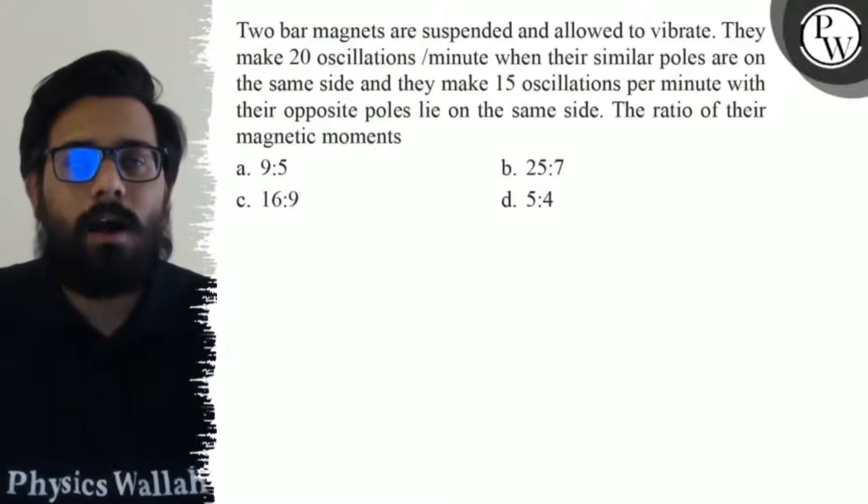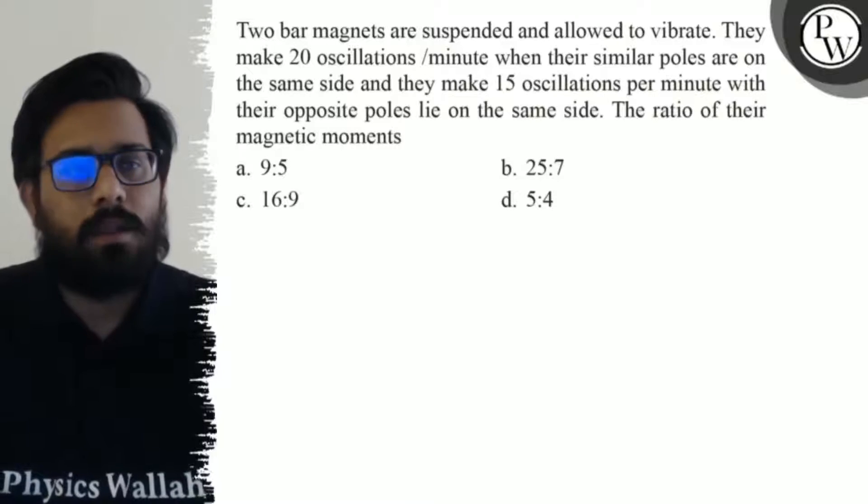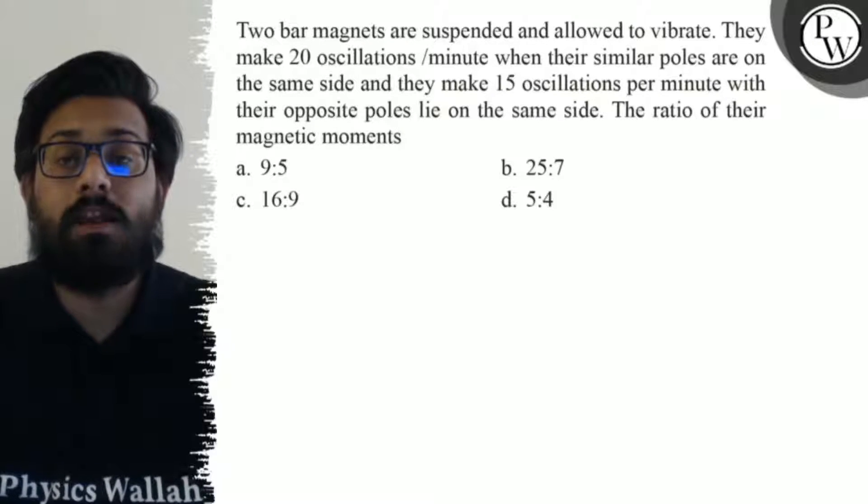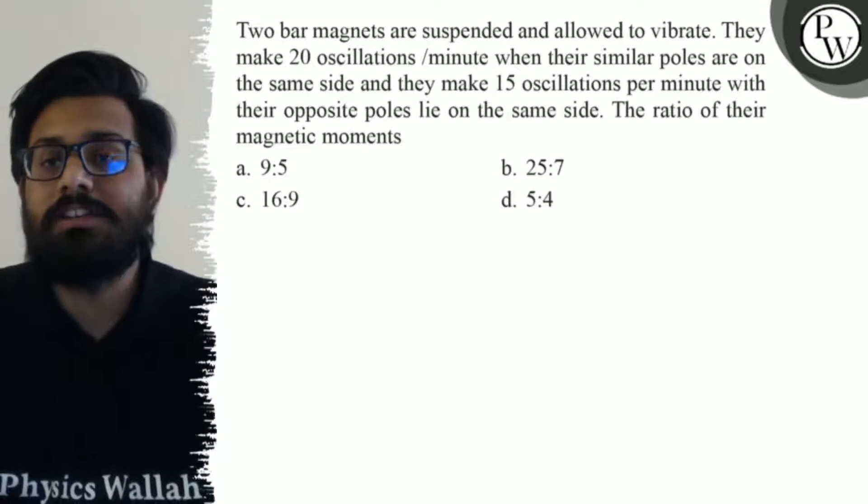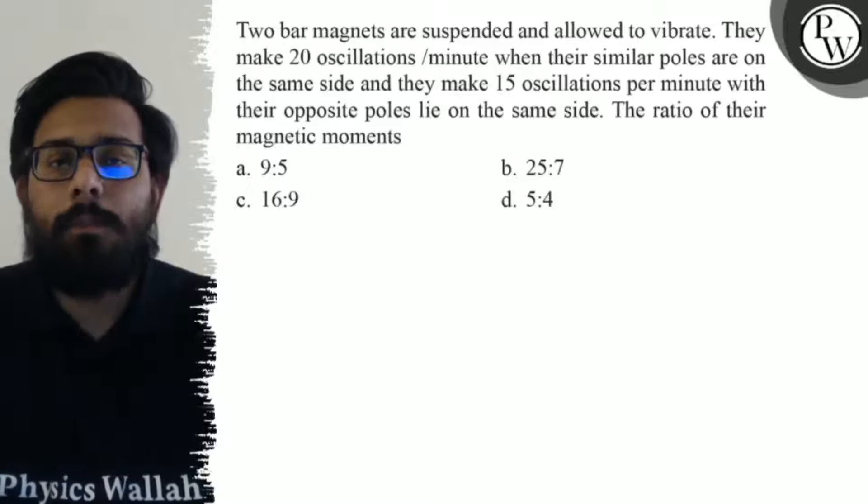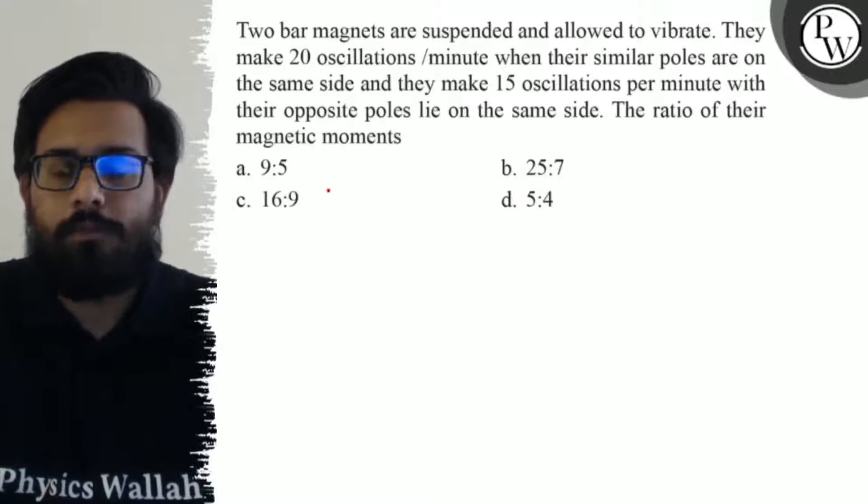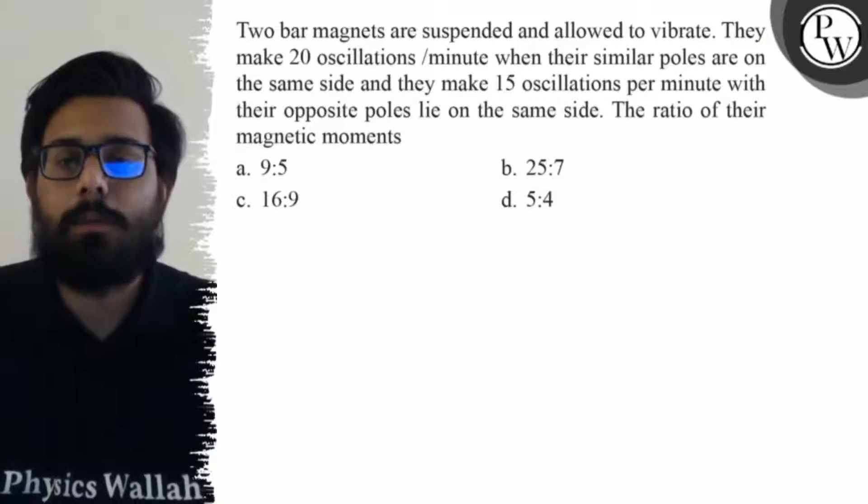Let's see the question. Two bar magnets are suspended and allowed to vibrate. They make 20 oscillations per minute when their similar poles are on the same side and they make 15 oscillations with their opposite poles lie on the same side. The ratio of their magnetic moments - your first option is 9:5, second option is 25:7, third option is 16:9, and the fourth option is 5:4.